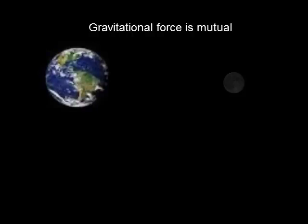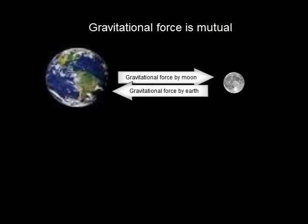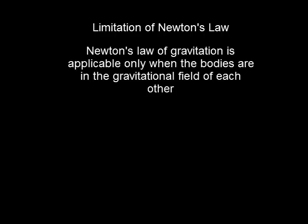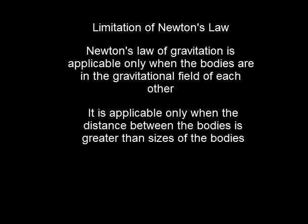The gravitational force is always mutual, meaning both bodies exert gravitational force on each other. It is a long-range force and it is always attractive in nature. There are two limitations for Newton's law of gravity. First, it is applicable only when the bodies are in the gravitational field of each other. Second, it is applicable only when the distance between the bodies is much larger than the sizes of the bodies.